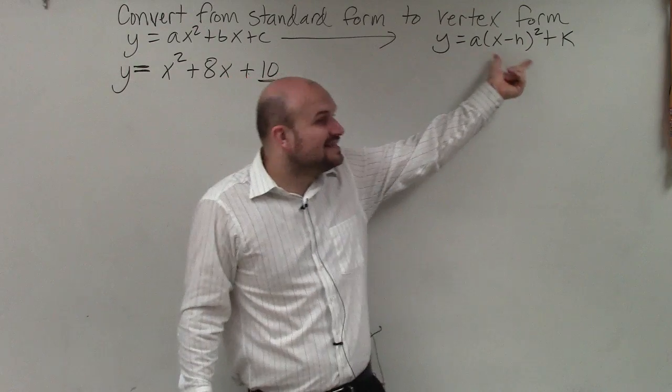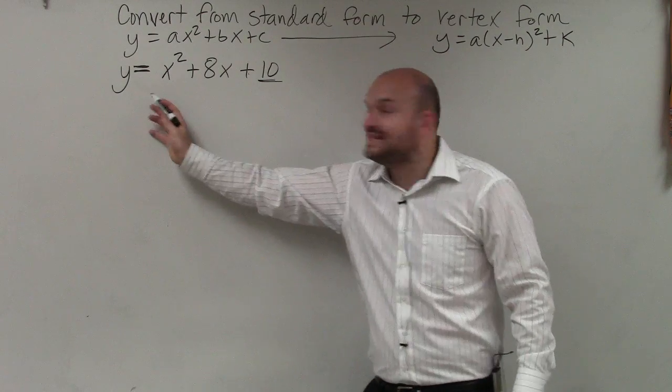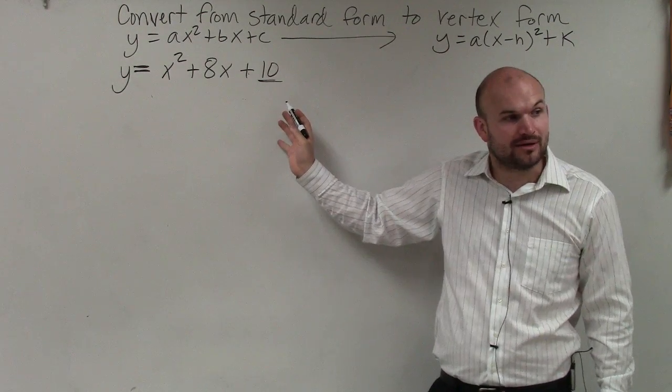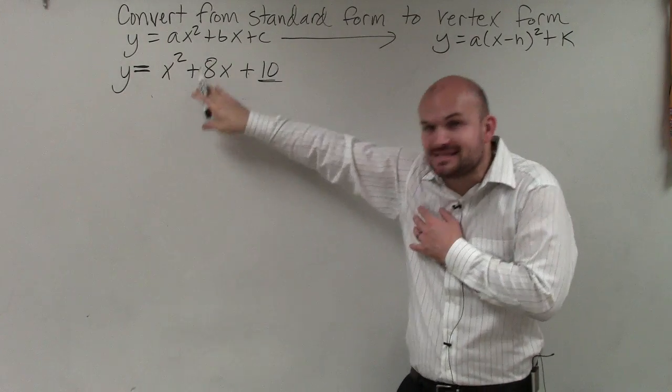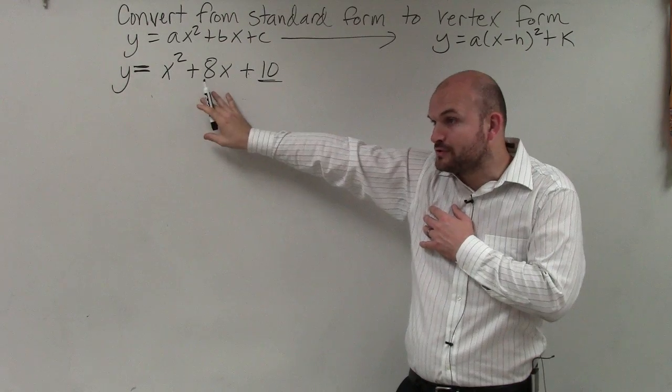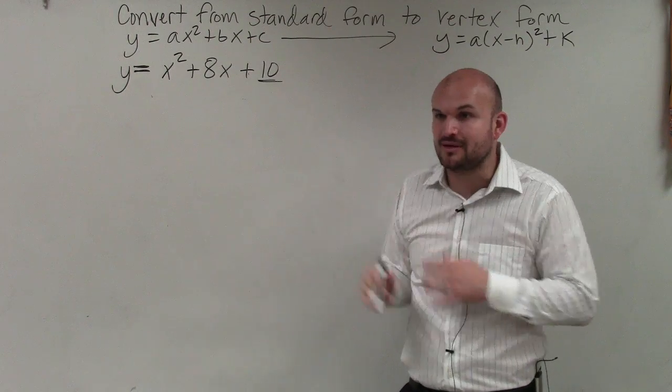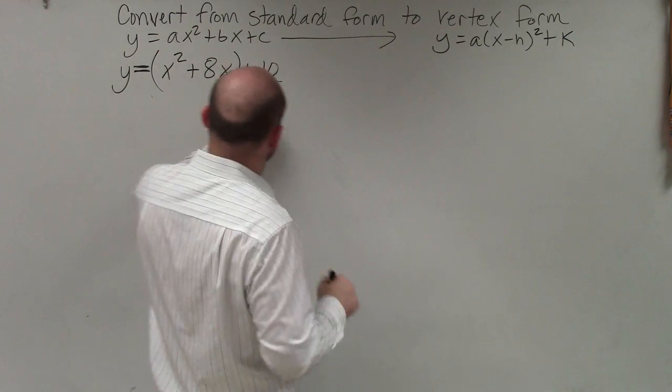So to get this to be a binomial squared, I have to have a perfect square trinomial. This is not a perfect square trinomial. So what I need to do is I need to create a perfect square trinomial.